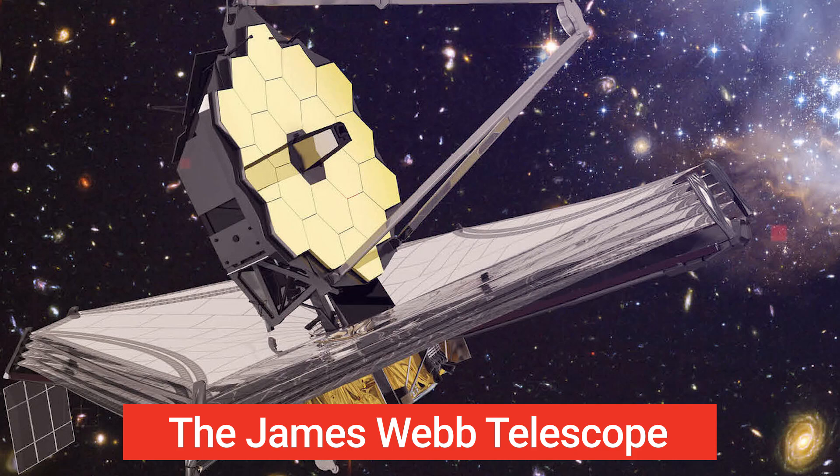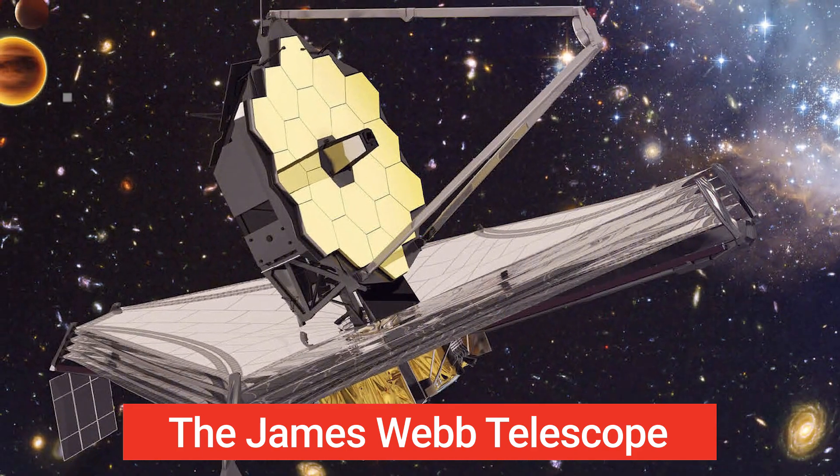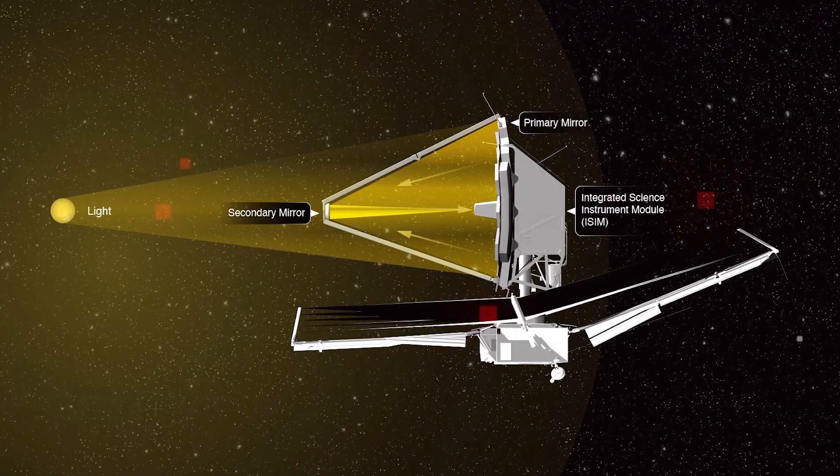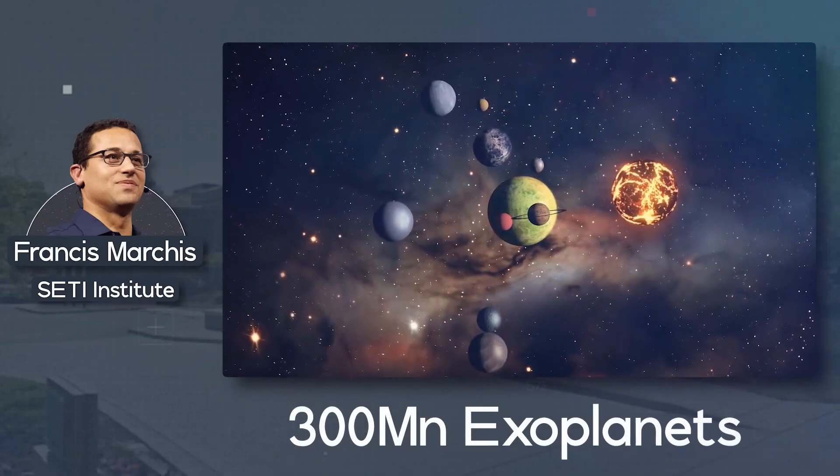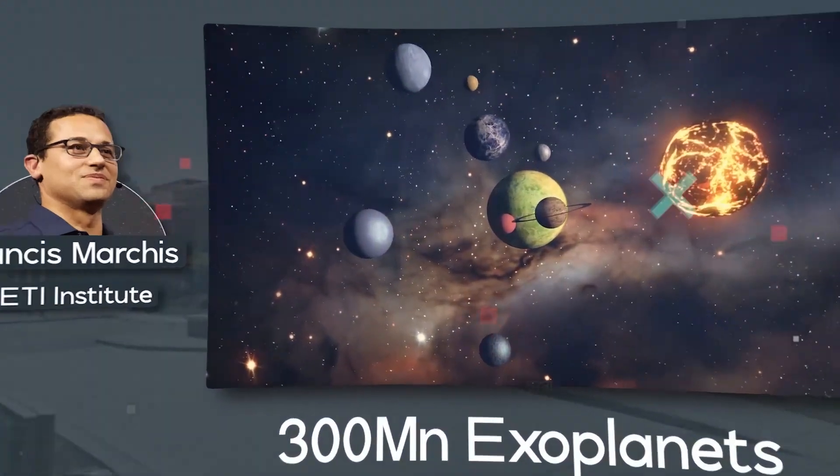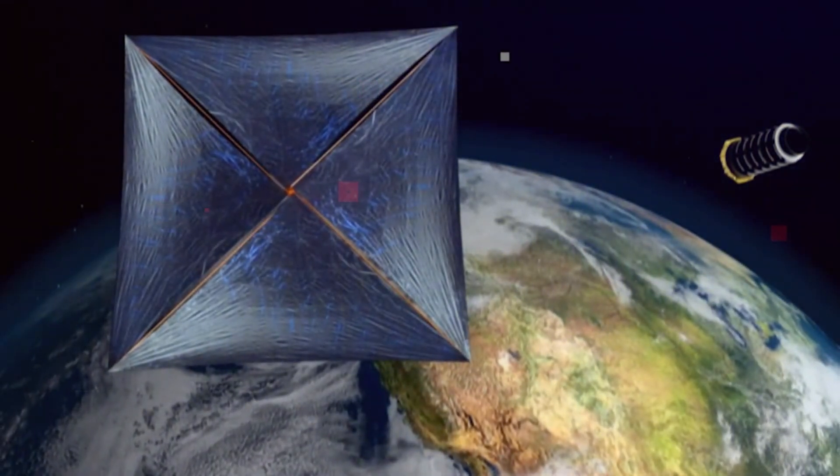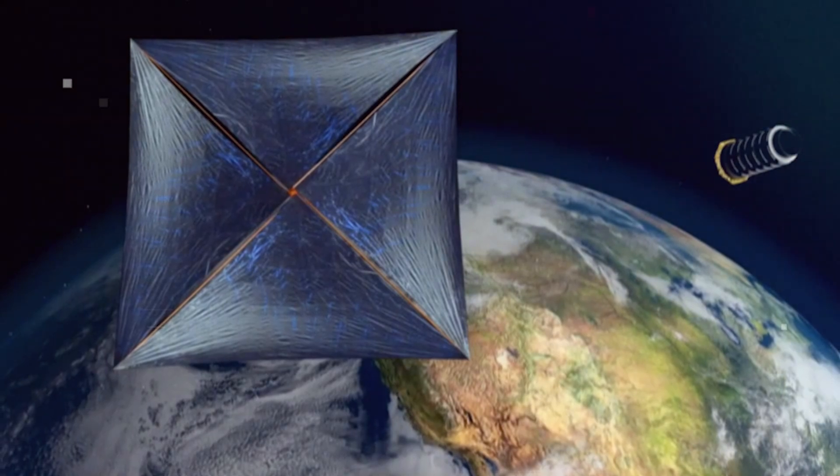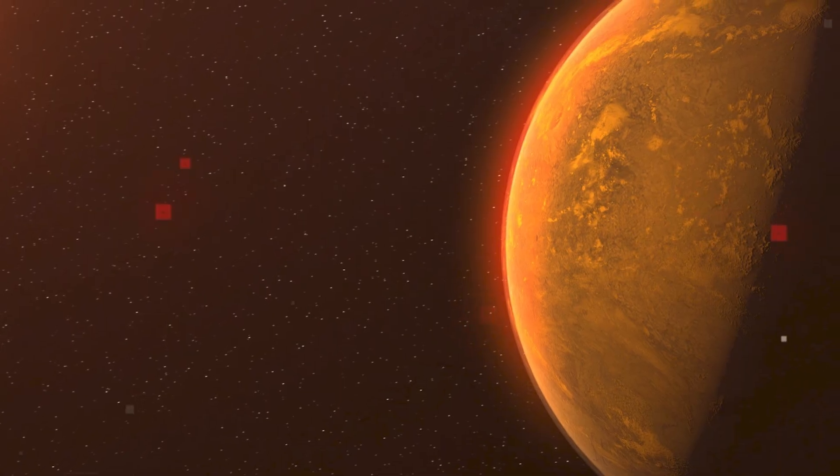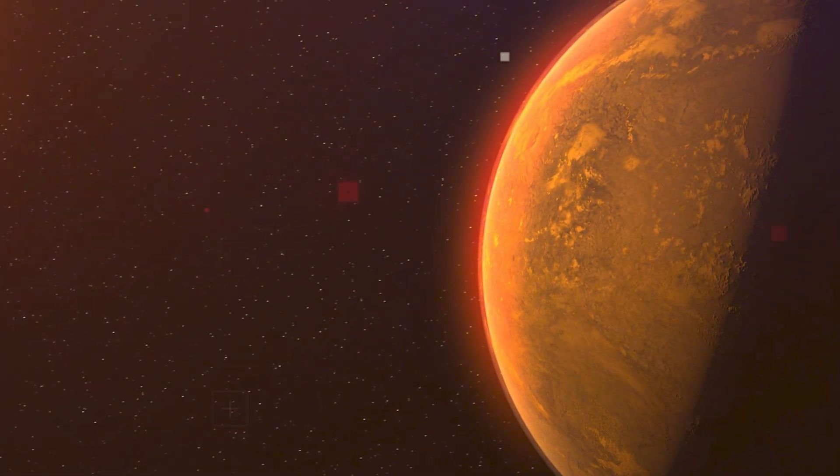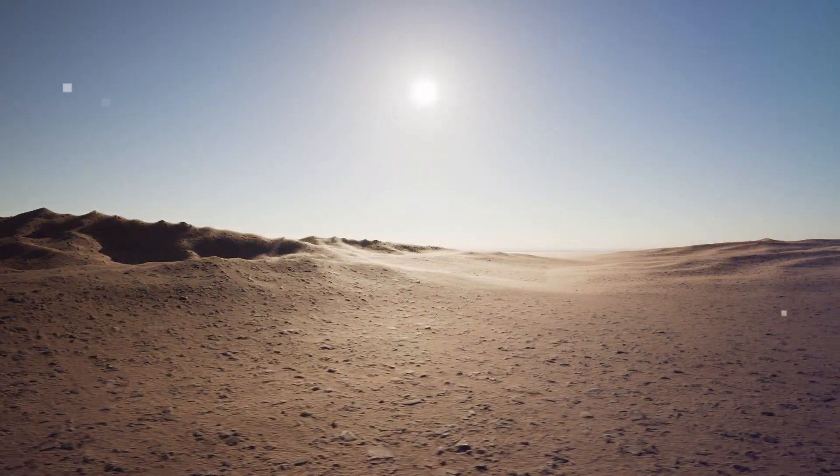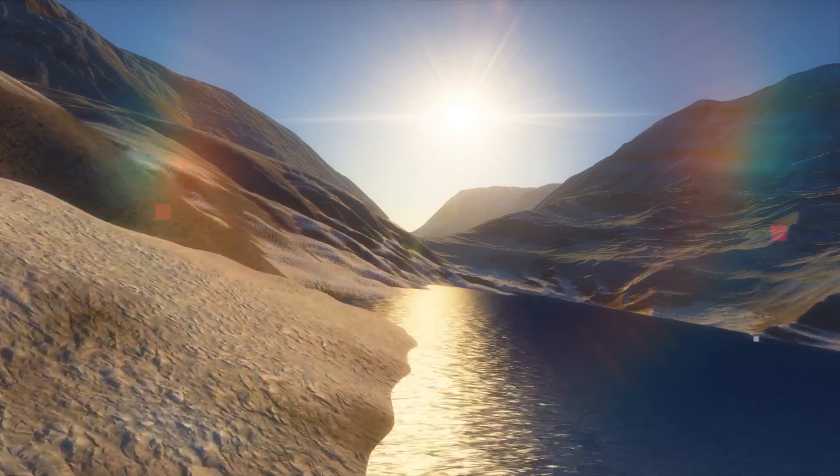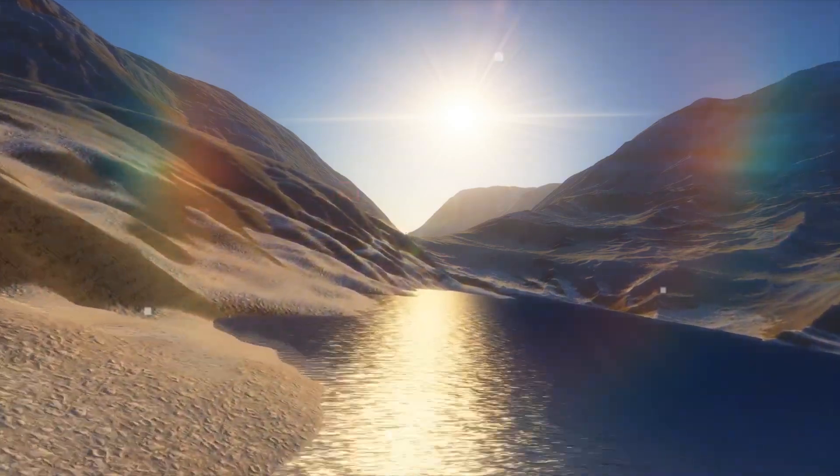The James Webb Telescope, with its massive 6.5-meter mirror and advanced infrared instruments, was specifically designed to peer through the cosmic haze that often obscures these distant planets. The image captured reveals more than just the outline of Proxima b. It provides valuable insights into the planet's atmosphere and surface features, offering clues about its composition and potential weather patterns.